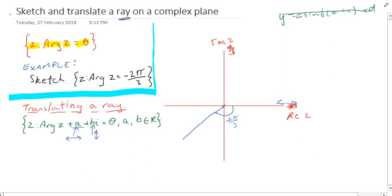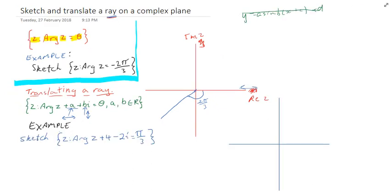Let's do an example. I'm going to sketch z arg(z + 4 - 2i) equals pi on 3. The process here is very straightforward. First of all, look at arg z,